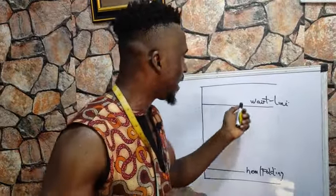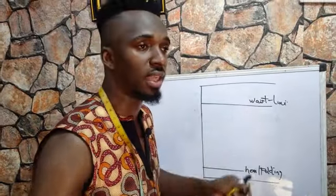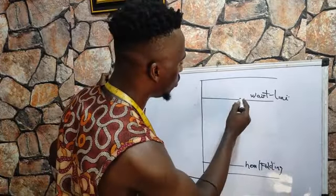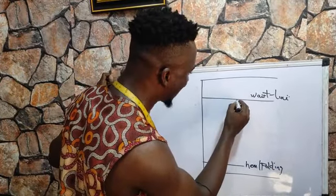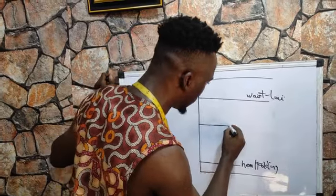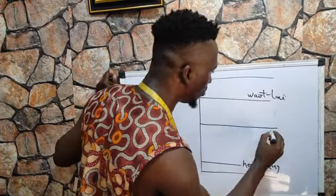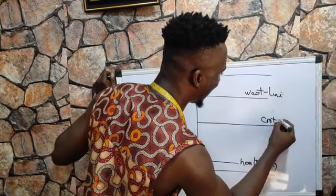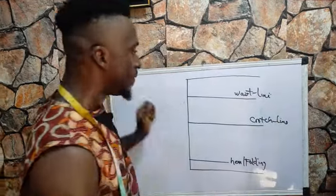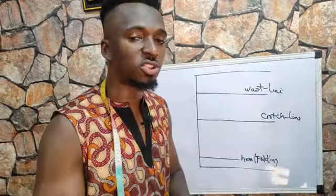Let's assume we have a hip of 40. Forty divided by 4 is 10. From the waist line, mark 10 inches downward — this gives you your 10-inch point, and from there you come to your crotch line.